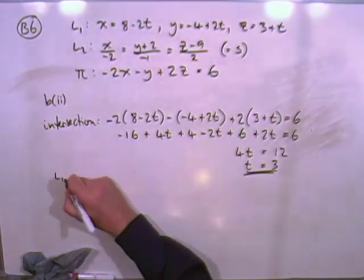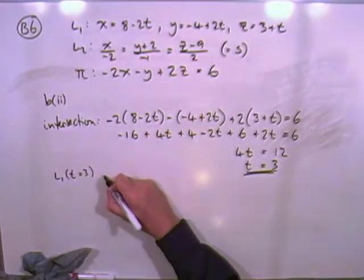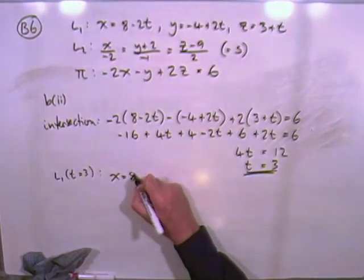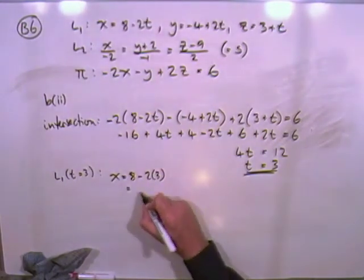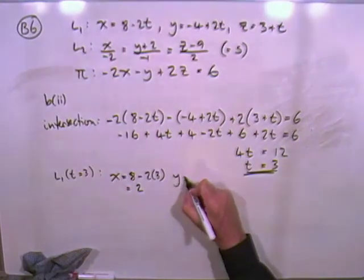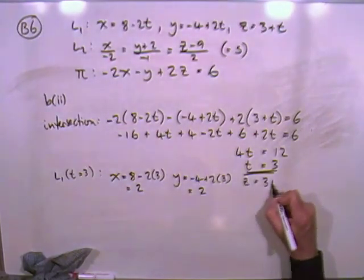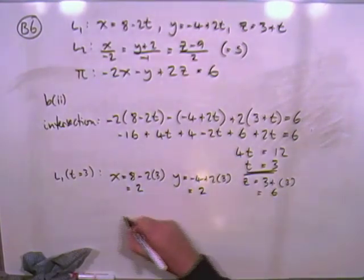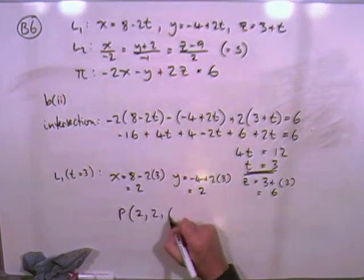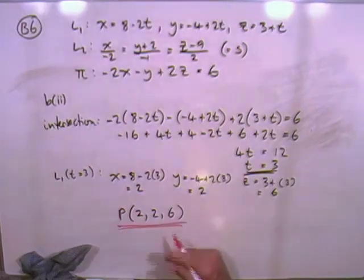So the point on line 1 is the point where the parameter is 3. So that identifies the point, 8 minus 2 times 3, so it'll be 2. Y will be negative 4 plus 2 times 3, that'll also be 2, and Z will be 3 plus 3, which will be 6. So the point must be the point 2, 2, 6. That's it.